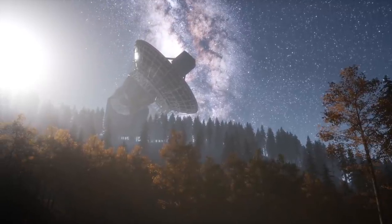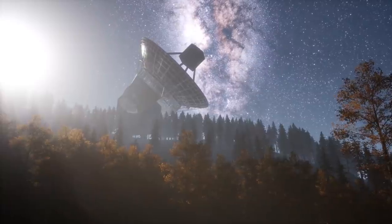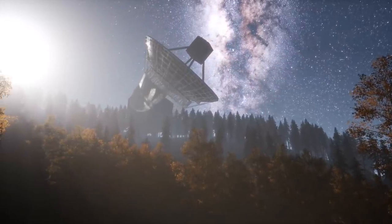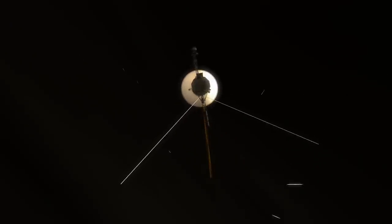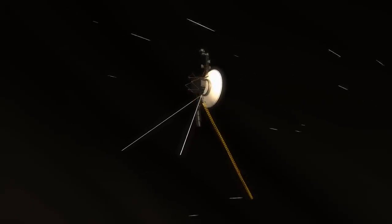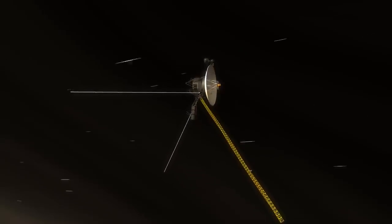NASA is upgrading the radio dish in Australia that mission team members used to send commands to Voyager 2, which again launched in 1977 and entered interstellar space in November 2018. Voyager 2 will be on its own until that work is done in January 2021, though the spacecraft will still be able to beam science data home.